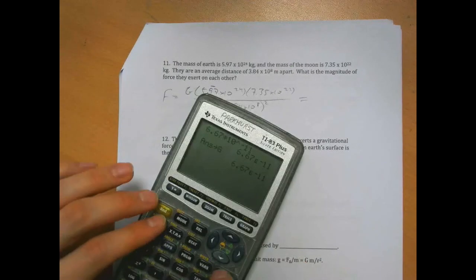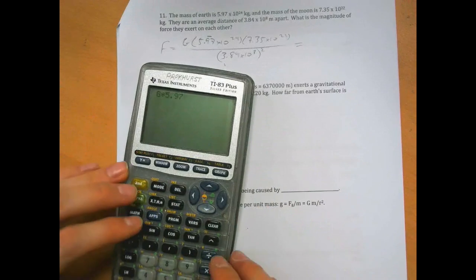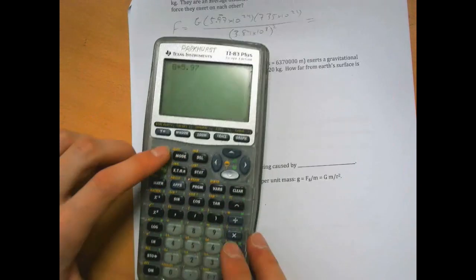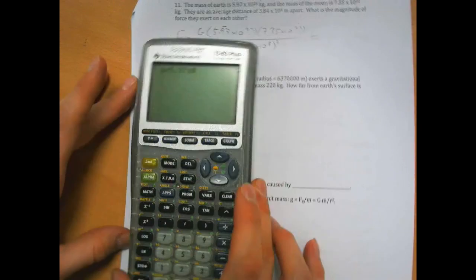Type it in, there is a button on your calculator that is your friend, it is the E button. 5.97 times 10 to the 24th, I can type 5.97 second comma, it gives you this E, that means times 10 to the power of.